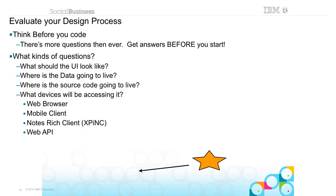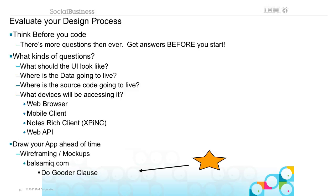What's going to be accessing this application? It's not just the Notes client anymore — it could be a web browser, a phone, an iPad, XPink, or just an API source. A great way to get started is to draw your app ahead of time. Get a wireframing app so you can mock it up, or get crayons and a piece of paper, as Chris Blatnick used to say — basically just draw your app, because it's a lot easier to change before you've started coding.